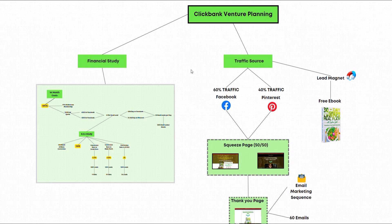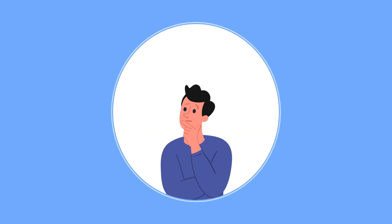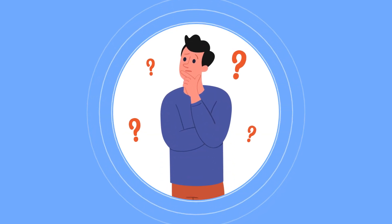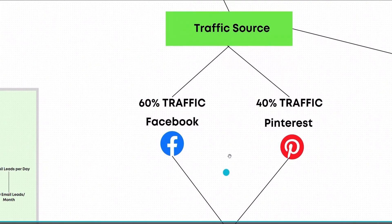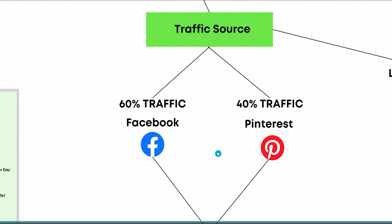So without further ado, let's dive right into it. Here's how you would plan to promote products on Clickbank. First thing is first, you have to know your traffic source — where are you going to get the traffic? On the whiteboard here, the traffic source for the promotional campaign I'm going to launch soon is 60% Facebook and 40% Pinterest.